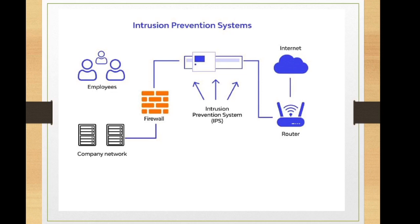Regarding IPS placement - this is a definite interview question frequently asked for L1 SOC analyst, information security engineer, or cybersecurity analyst roles. The IPS is placed between a router and a firewall. In this diagram you can see how a firewall protects a network, then an intrusion prevention system is placed after the firewall, and then traffic is routed to the internet. In a physical interview you should draw and show this diagram - it demonstrates networking knowledge and impresses the interviewer.